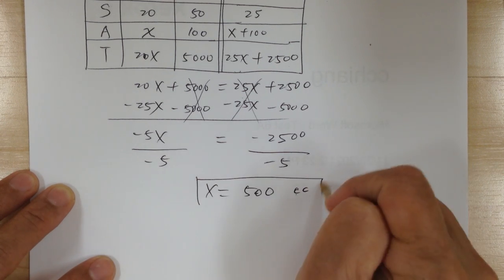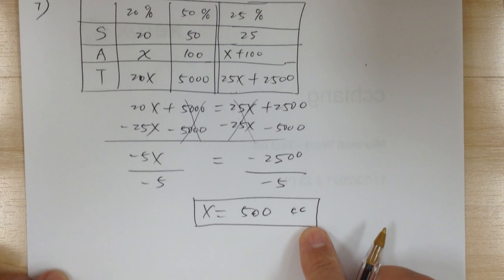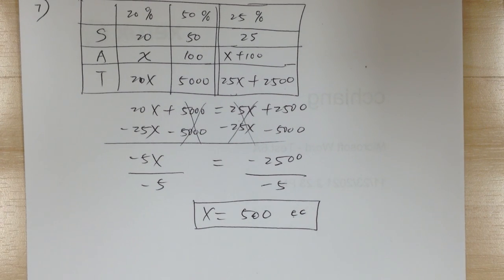X equals 500, and our label will be CC — cubic centimeters. And that's it. Let's go to the next one.